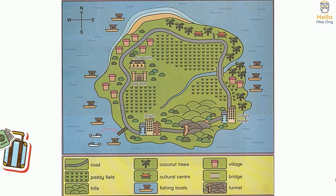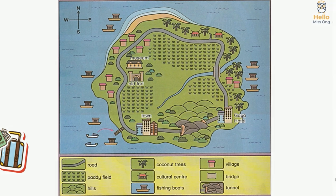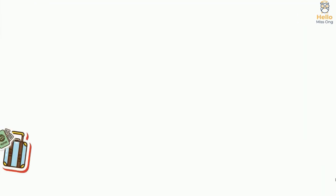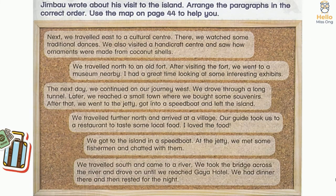Now you can work with a friend. Take turns to be Jimbao and use the map to talk about your visit to the island. Exercise Two: Jimbao wrote about his visit to the island. Arrange the paragraphs in the correct order. Use the map on page 44 to help you.